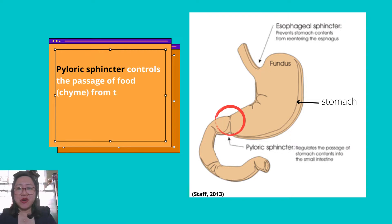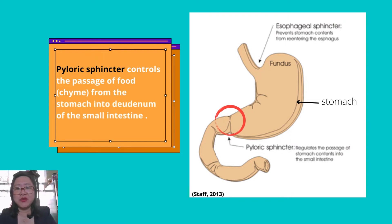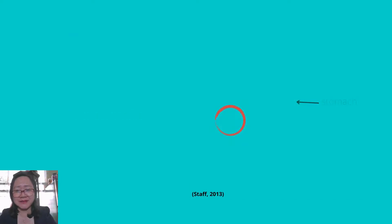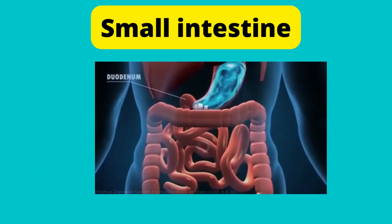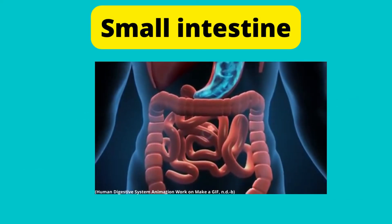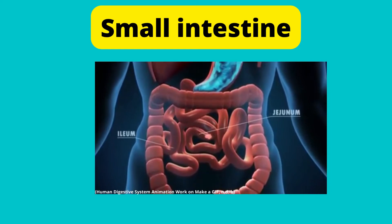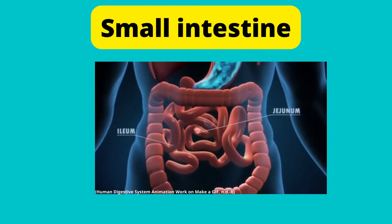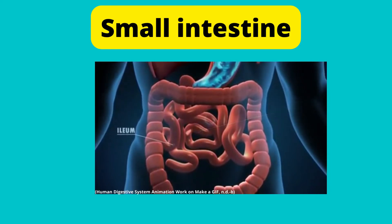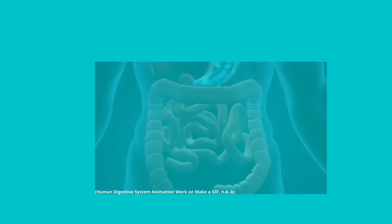This controls the passage of chyme from the stomach into the duodenum of the small intestine. From the stomach, the food moves down to the duodenum, then to the jejunum, then to the ileum of the small intestine.